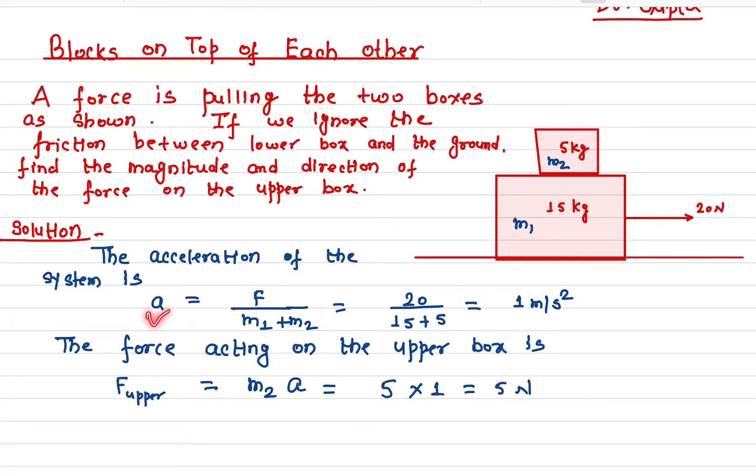The acceleration of the system is force divided by the total mass m1 plus m2. The first object is 15 kilograms, the second is 5 kilograms, so the acceleration is 1 meter per second squared.